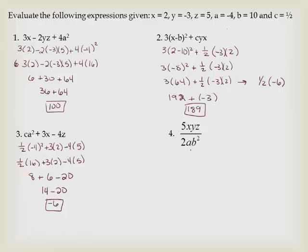And now I have a division fraction. So I'm going to plug in over here: 5 times 2 times negative 3 times 5 over 2 times negative 4 times 10 squared. 5 times 2 times negative 3 times 5 is going to give me negative 150. And then I'll have 2 times negative 4 and 10 squared is 100.